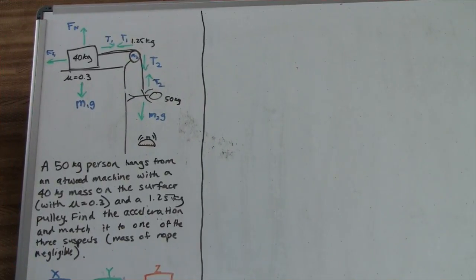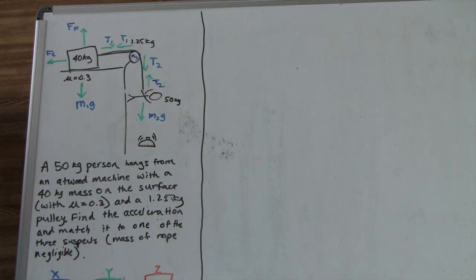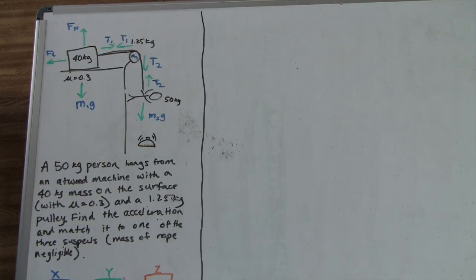So the problem that we have here is a 50 kg person hangs from an Atwood machine with a 40 kg mass on the surface, which has a coefficient of friction of 0.3, and a 1.25 kg pulley. We need to find the acceleration of the person as he descends to grab the bell.